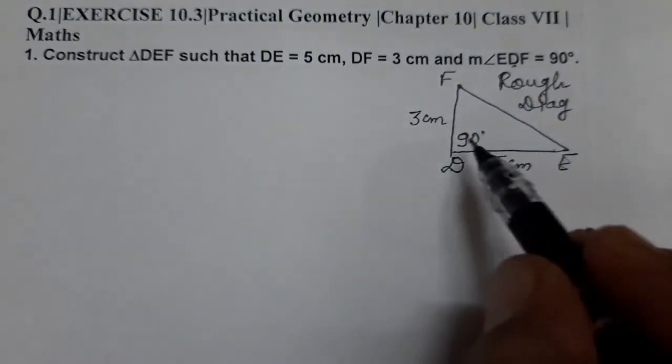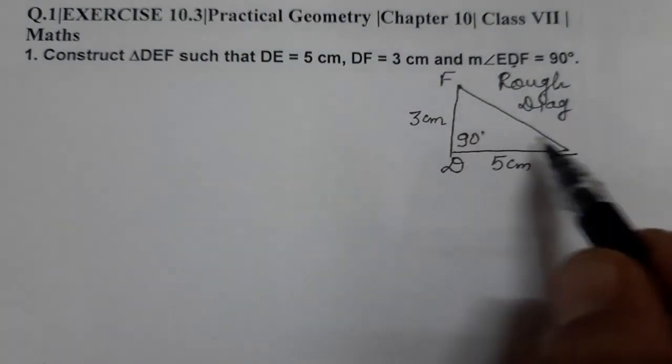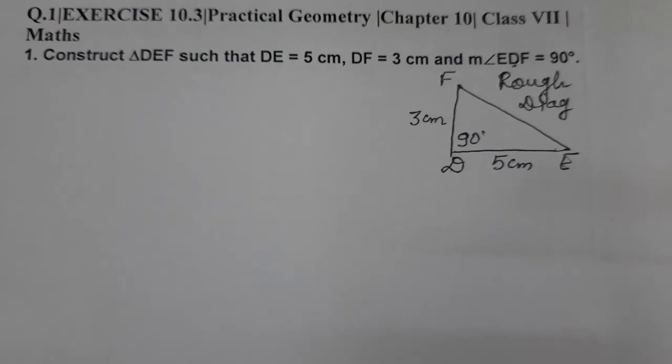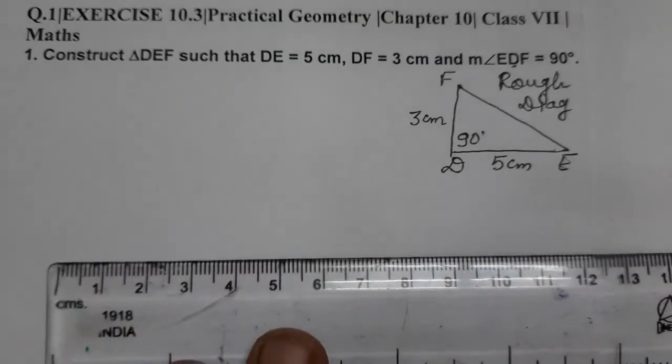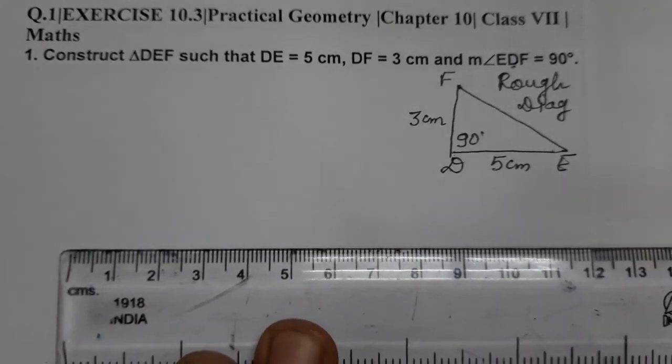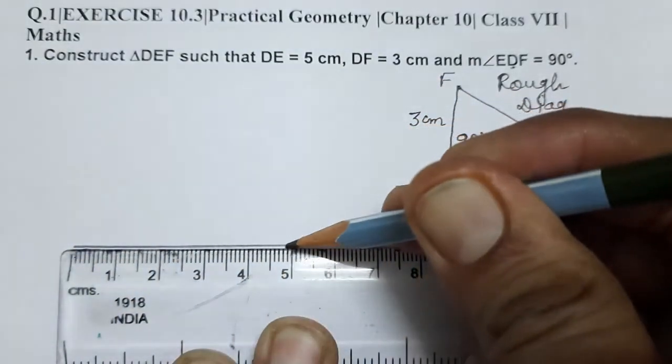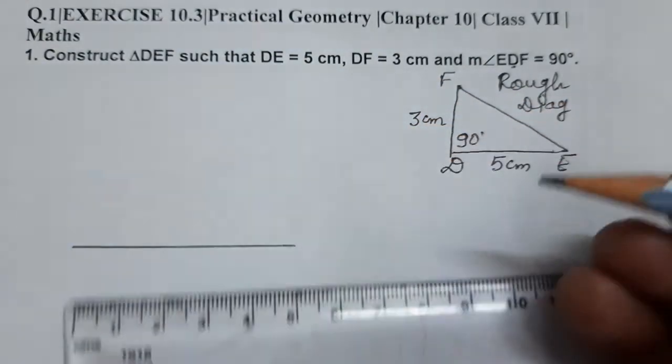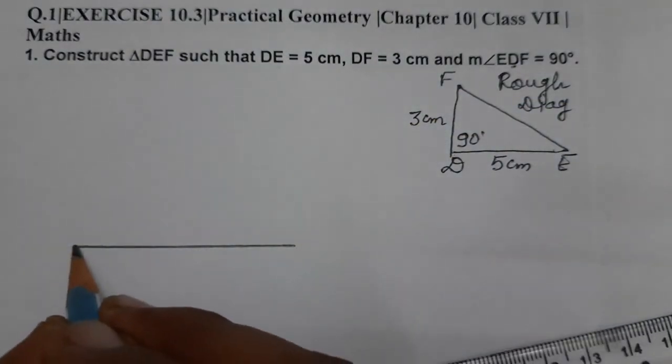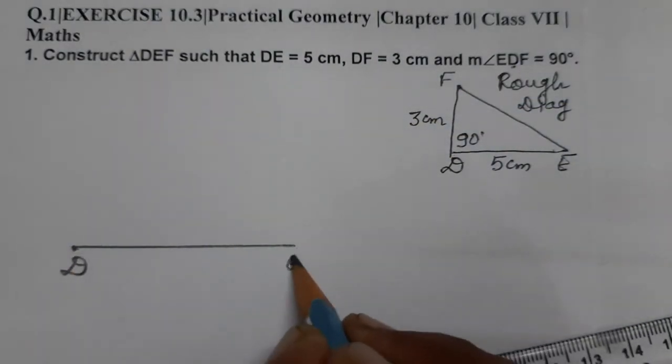Now let's construct. We have made the rough diagram. First of all, we need a base. What is the base given to us? DE is 5 centimeters. So with ruler we are going to make 5 centimeters. So see, this is 5 centimeters. DE, this is D and this is E. DE is 5 centimeters.